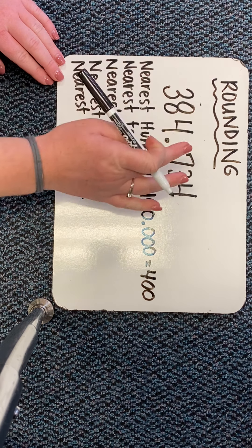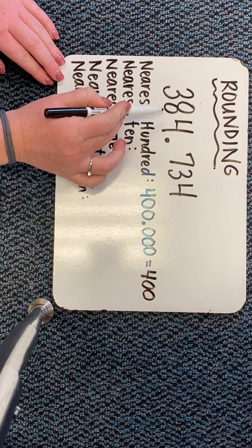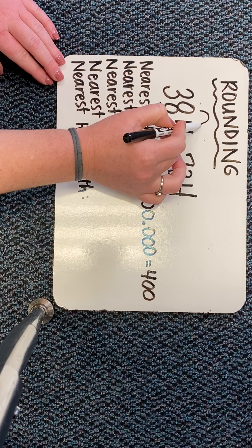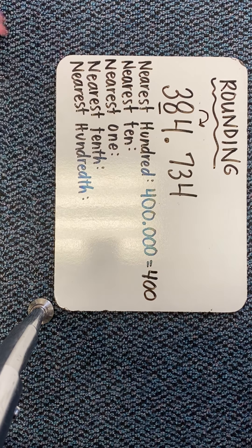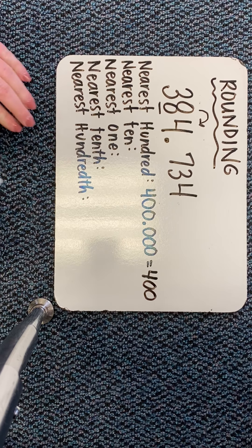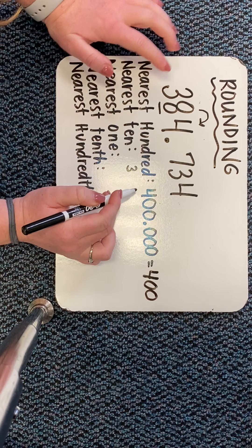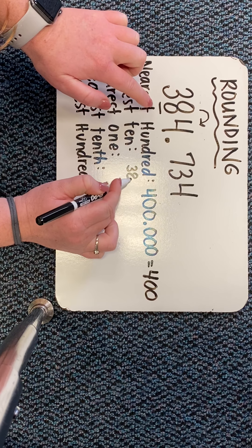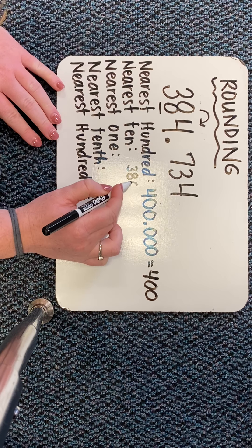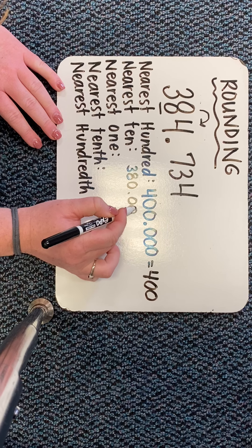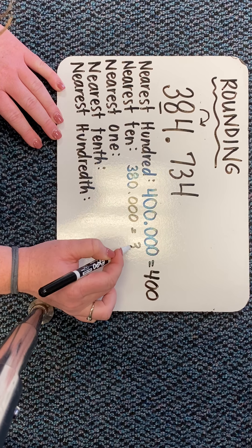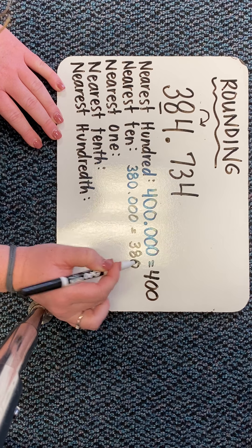Now if I were to round to the nearest ten, I would say ones, tens — oh there it is. Is this four going to bump the eight up to a nine or keep it an eight? Nice job. It will stay an eight. So everything before the underline stays the same, and everything else has to become zeros. That's the same as saying to the nearest ten it's 380.